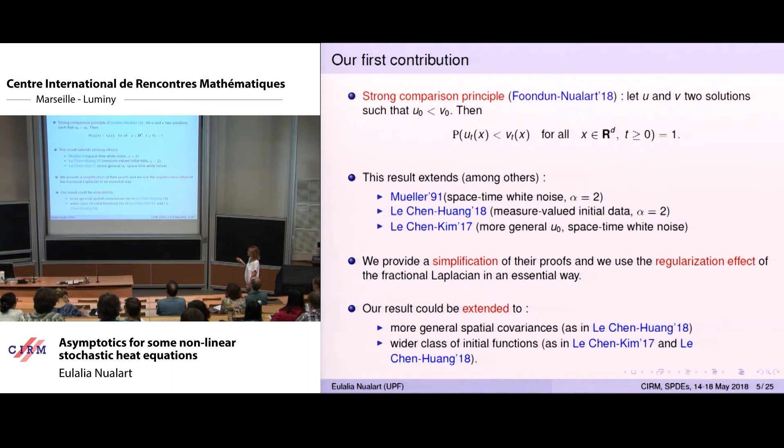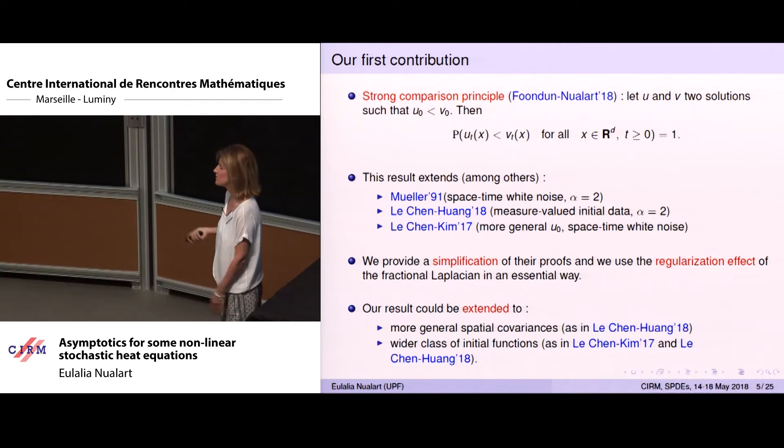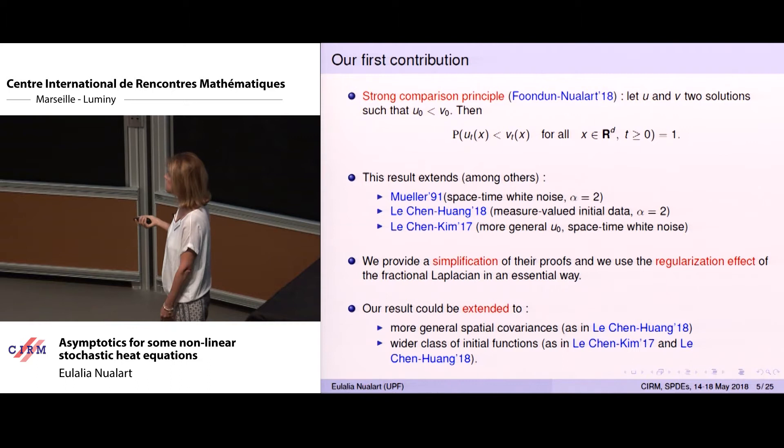In the paper by Le Chen and Wan, they considered general spatial covariances. We believe our paper could also be extended to that setting, but for simplicity of notation we considered just the Riesz kernel. Also, the initial function for us is always a bounded function; they consider more general initial conditions, and we believe this could also be extended.